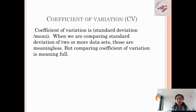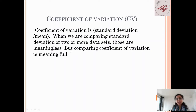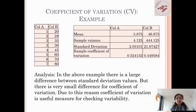Now we will understand what the coefficient of variation is. The coefficient of variation is the standard deviation divided by the mean. When we are comparing the standard deviation of two or more data sets, that comparison is meaningless. But comparing the coefficient of variation is meaningful — that's why we use the coefficient of variation. Let us understand this with an example.